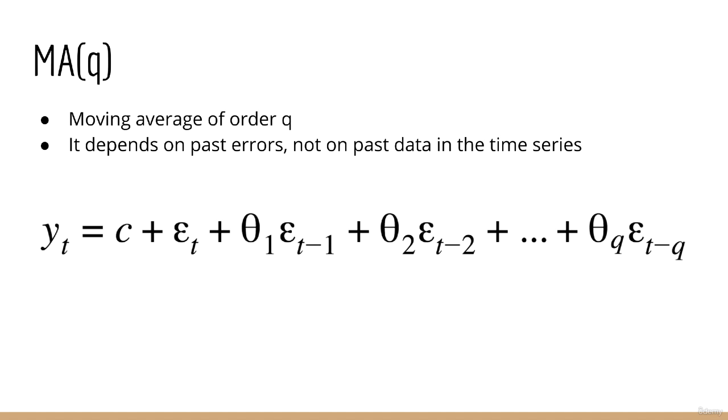This should definitely strike you as odd. In pretty much all of machine learning, we typically create models which depend on input data. In this moving average model, there is no input data to be seen. Instead, the time series depends only on errors.